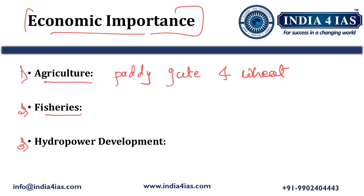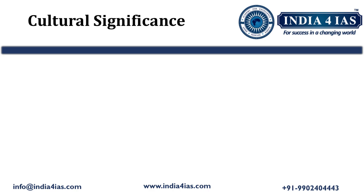The third economic importance is hydropower development. Several hydropower projects have been developed along the river in Sikkim, including Teesta 3, 4, and 5 projects, contributing significantly to Sikkim's economy and energy generation. The Teesta River is also culturally significant for people in Sikkim and West Bengal. Various cultural festivals are celebrated along the river, especially in Darjeeling and Sikkim, and it is associated with local folklore and spiritual beliefs, particularly among indigenous communities in these regions.